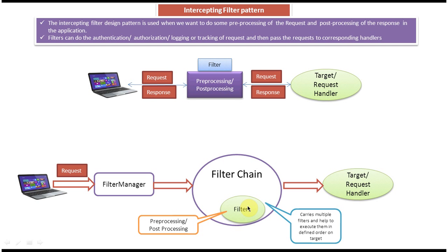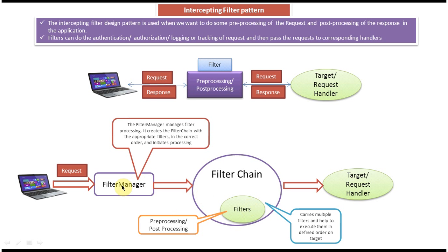Once the filter chain executes all the filters in the defined order, it will invoke the target or send the request to the target or request handler. The filter manager manages the filter processing — it is responsible for creating the filter chain and adding the appropriate filters in the correct order. Once that initial setup is done, it will initiate the processing.